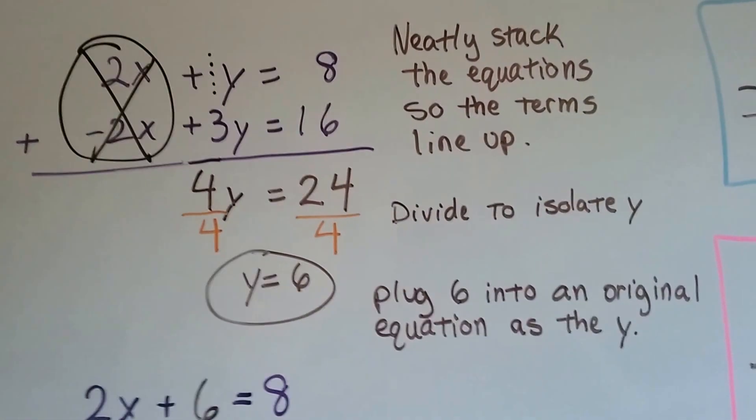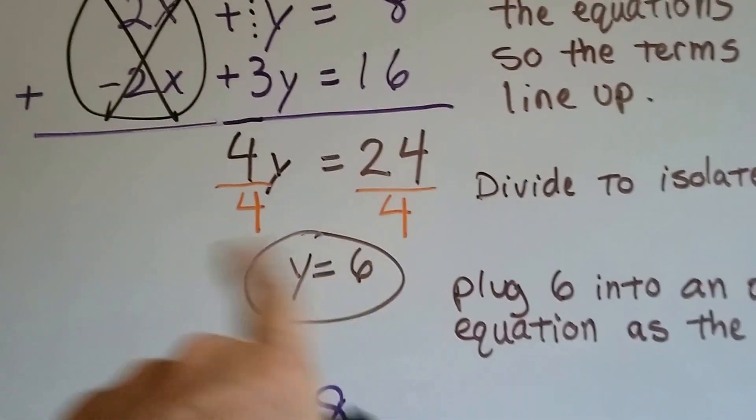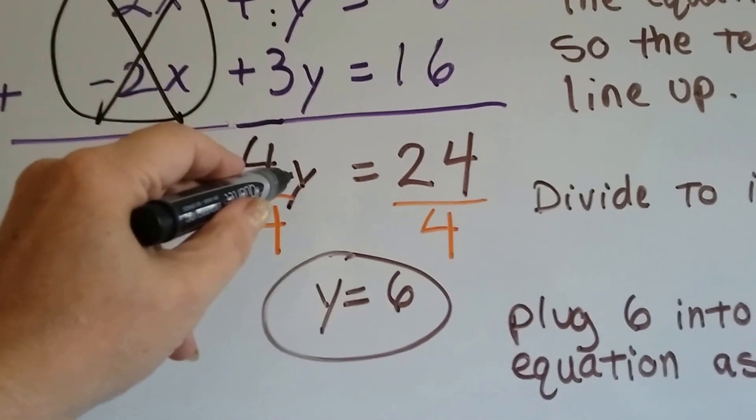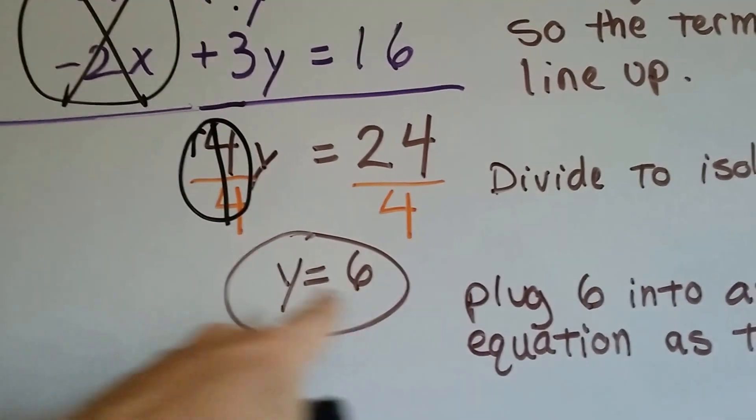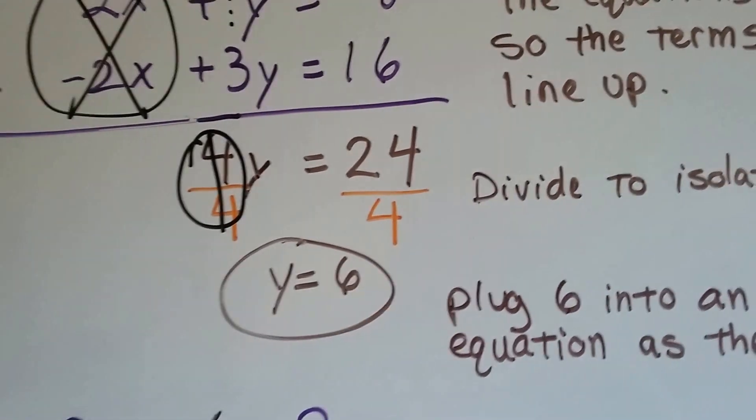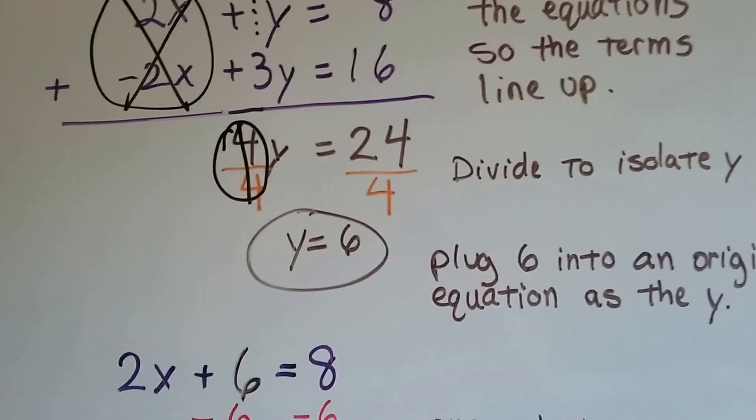Well, now we can divide to isolate y. So we divide both sides by 4, because that's what will get the y by itself. We get our friend the invisible one, we have y equals 6, because 24 divided by 4 is 6. So we've solved for y now.